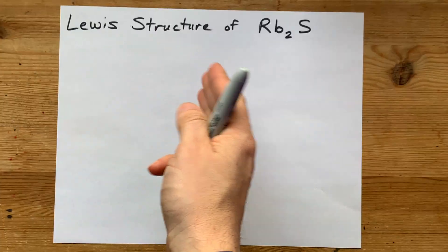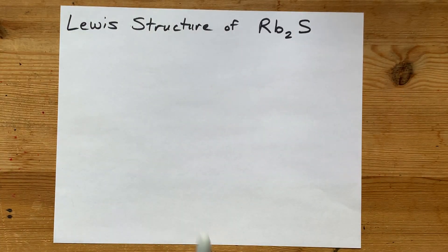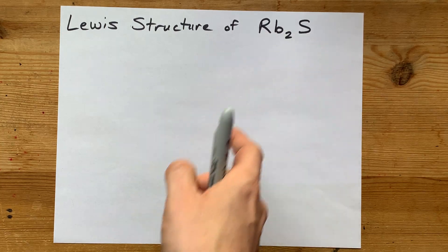Let's draw the Lewis structure of rubidium sulfide. That's Rb₂S.